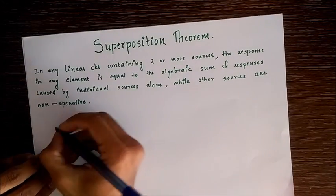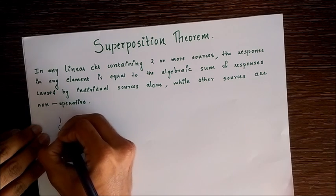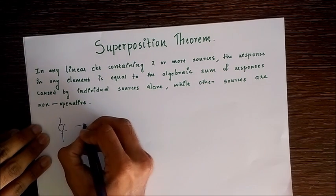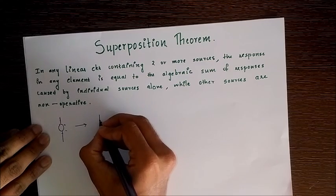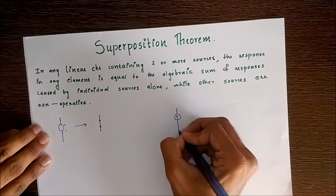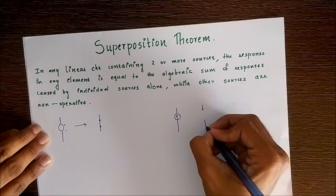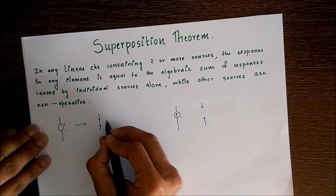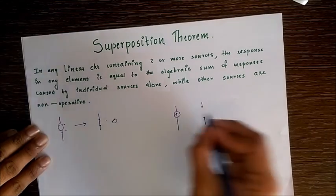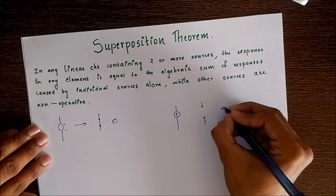In ideal cases, the voltage source is replaced by a short circuit, whereas a current source is replaced by an open circuit. This is equivalent to zero resistance and infinite resistance respectively.